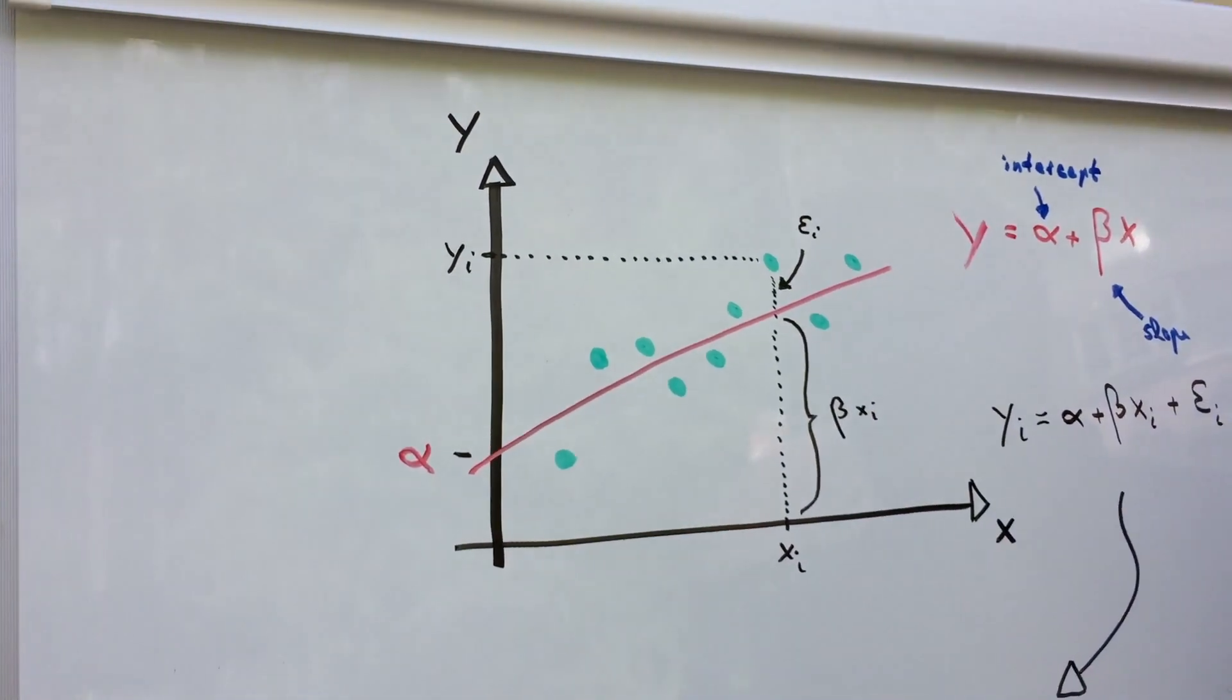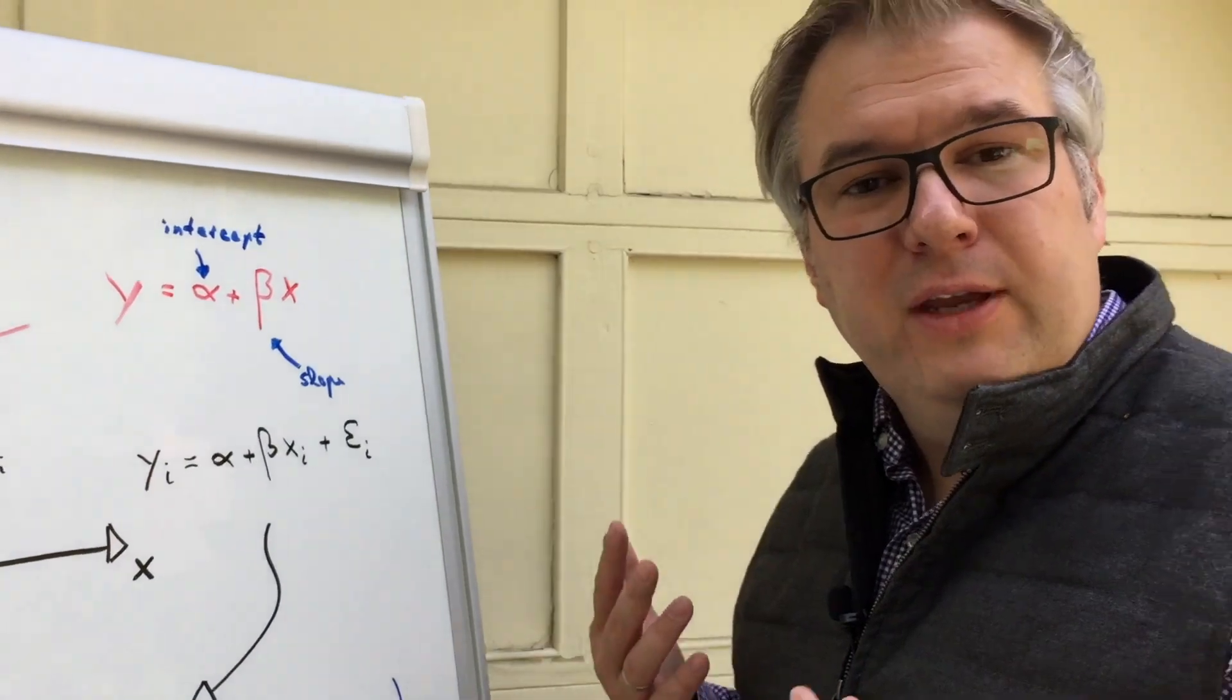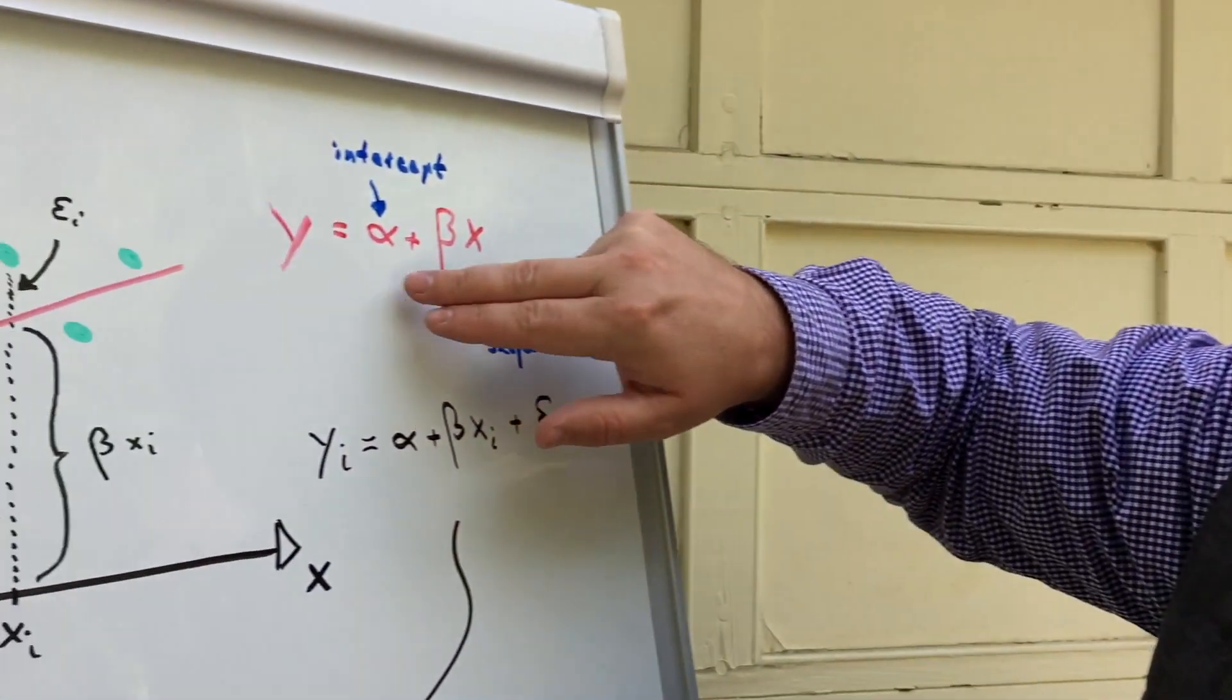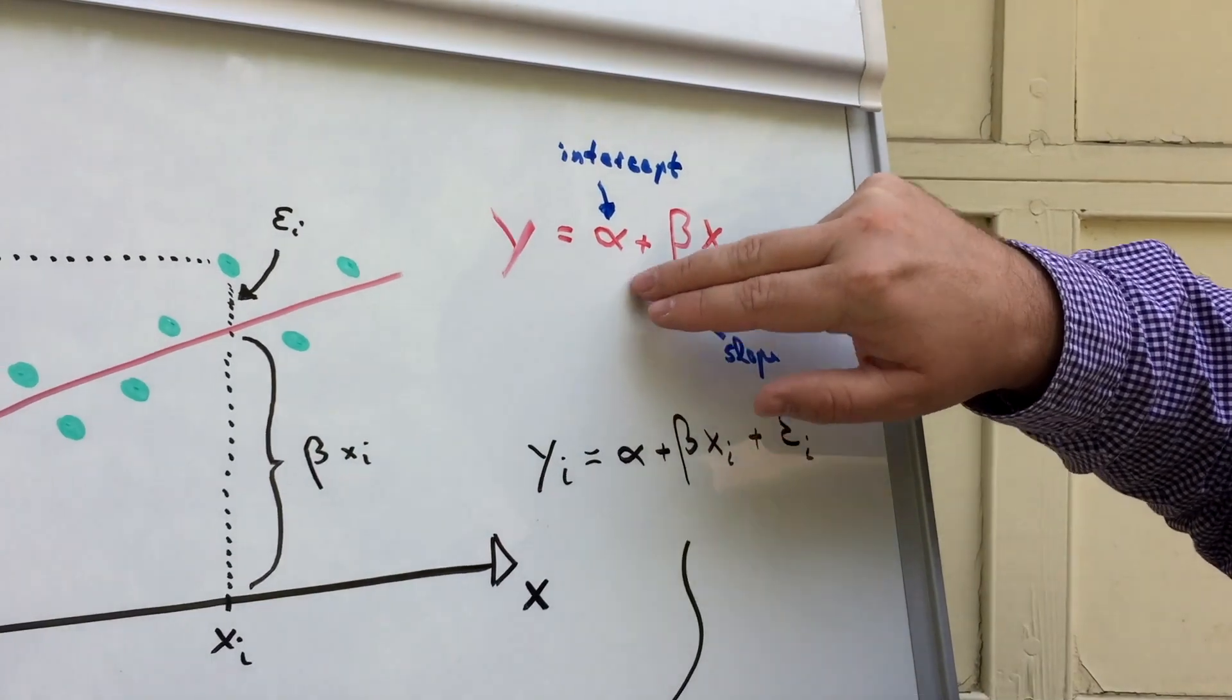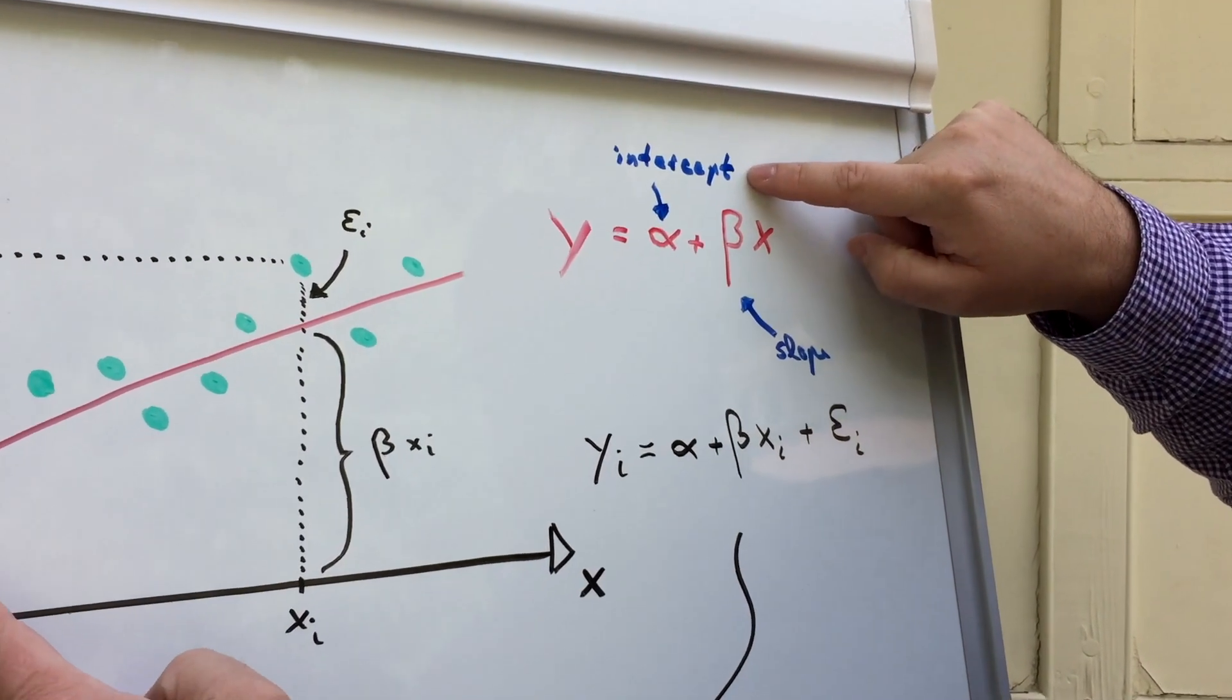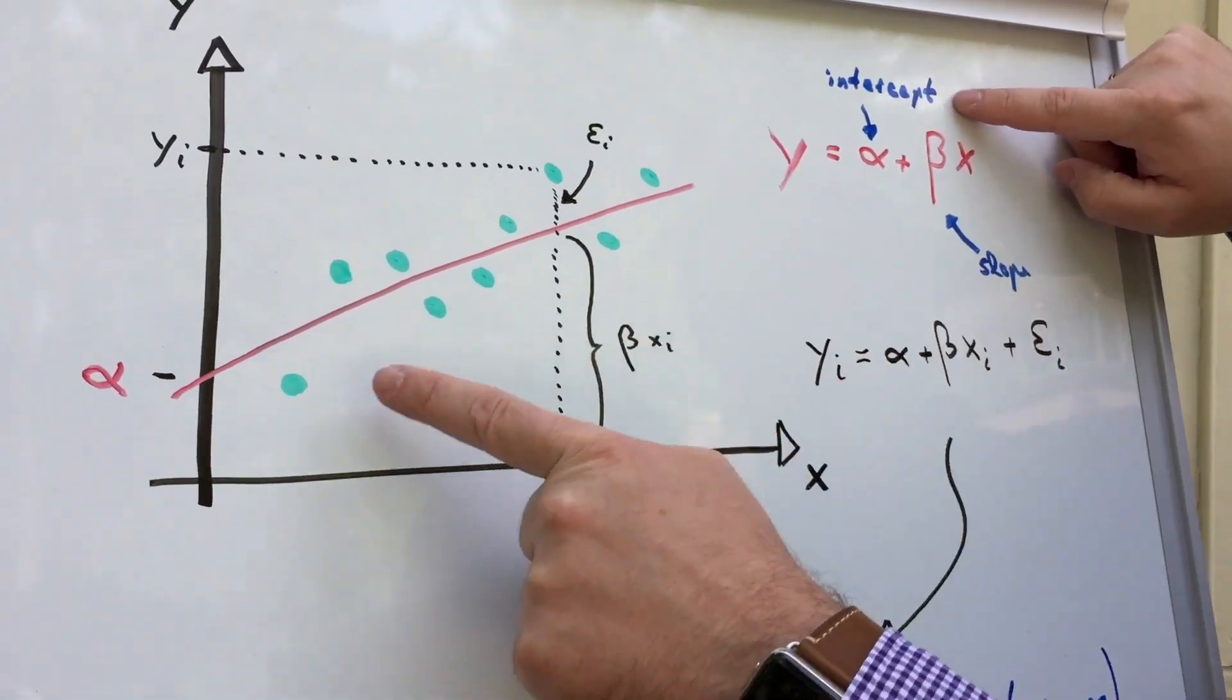So for any given position on the x-axis, this line then will tell us what is the corresponding value for y. Well, that's the whole idea of the linear regression curve. Okay, so the curve itself can be described as a formula here. Y is defined as alpha, this is the intercept, the position where it actually crosses the y-axis here, plus beta, which is the slope of the curve.